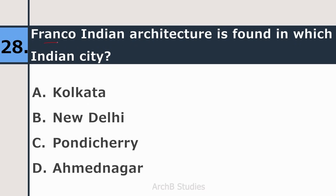Twenty-eighth question: Franco-Indian architecture is found in which Indian city — Kolkata, New Delhi, Pondicherry, or Ahmednagar? The right answer is Pondicherry.